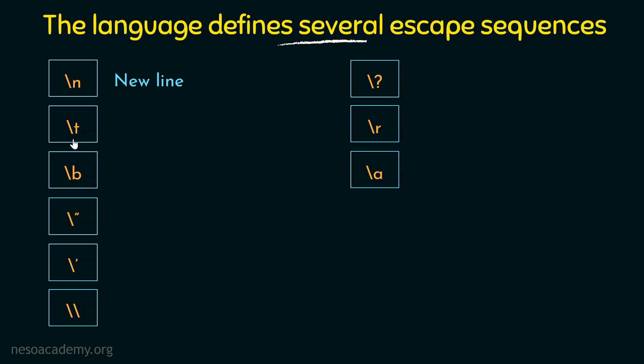The next one is backslash t, which means a horizontal tab. If you give a backslash t in your cout statement, a horizontal tab will be printed on that line. Next we have backslash b, which stands for backspace. If you want to represent the backspace, you can use backslash b, and the character after backslash b will be erased.